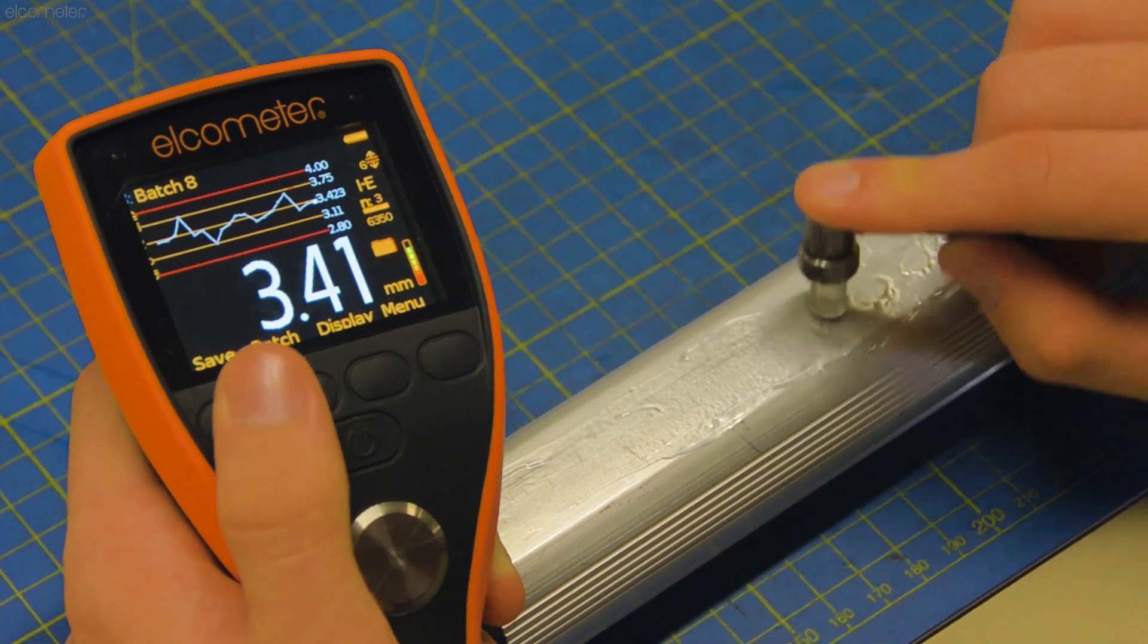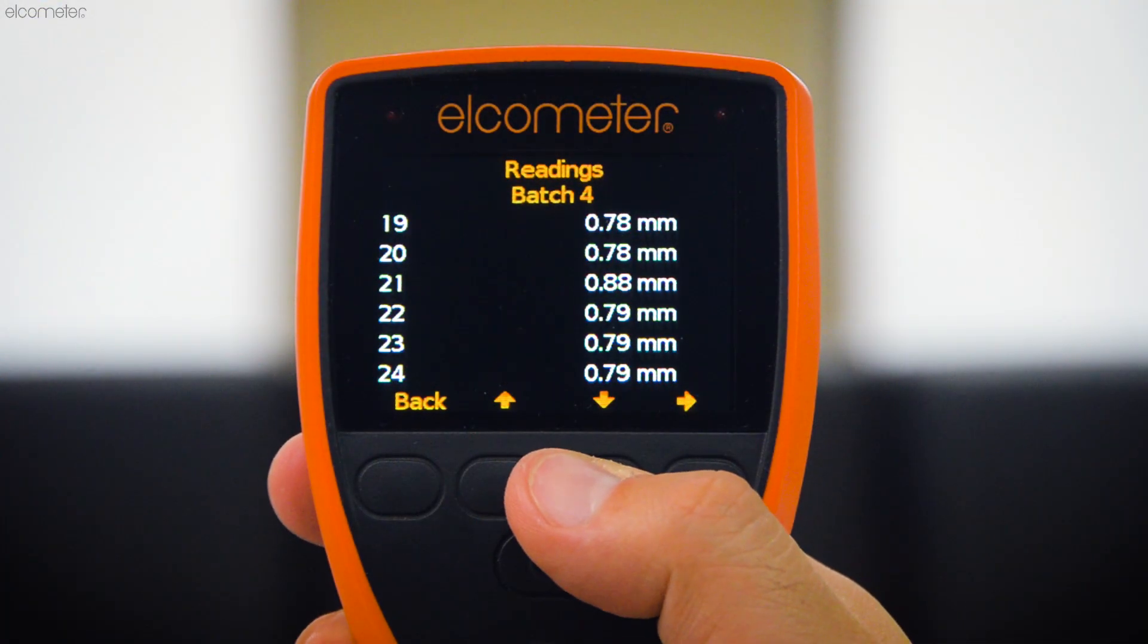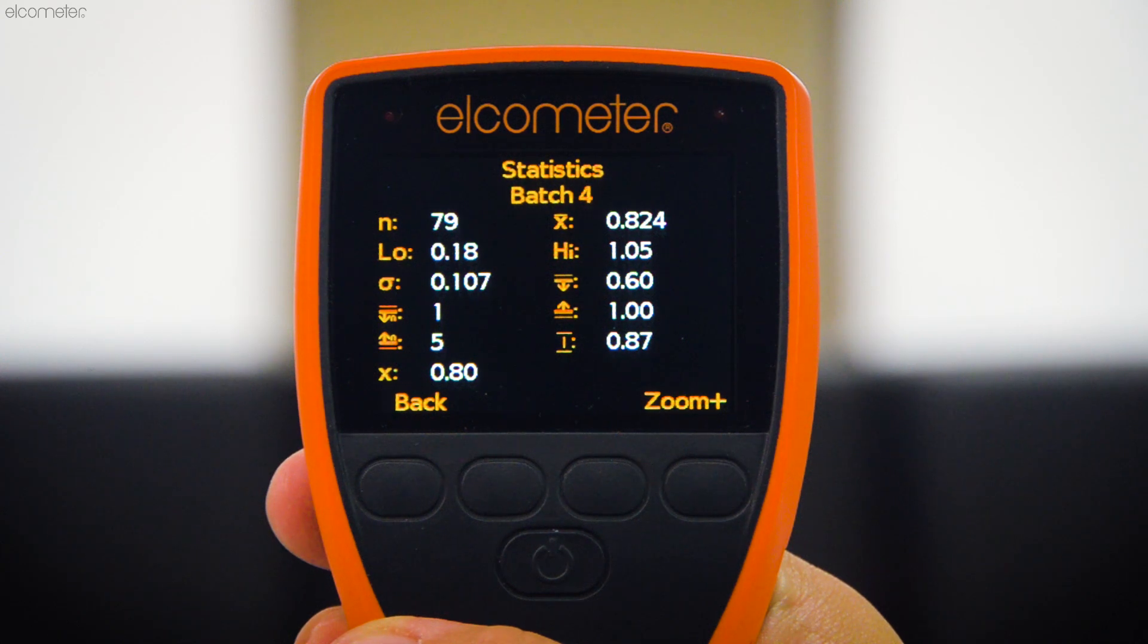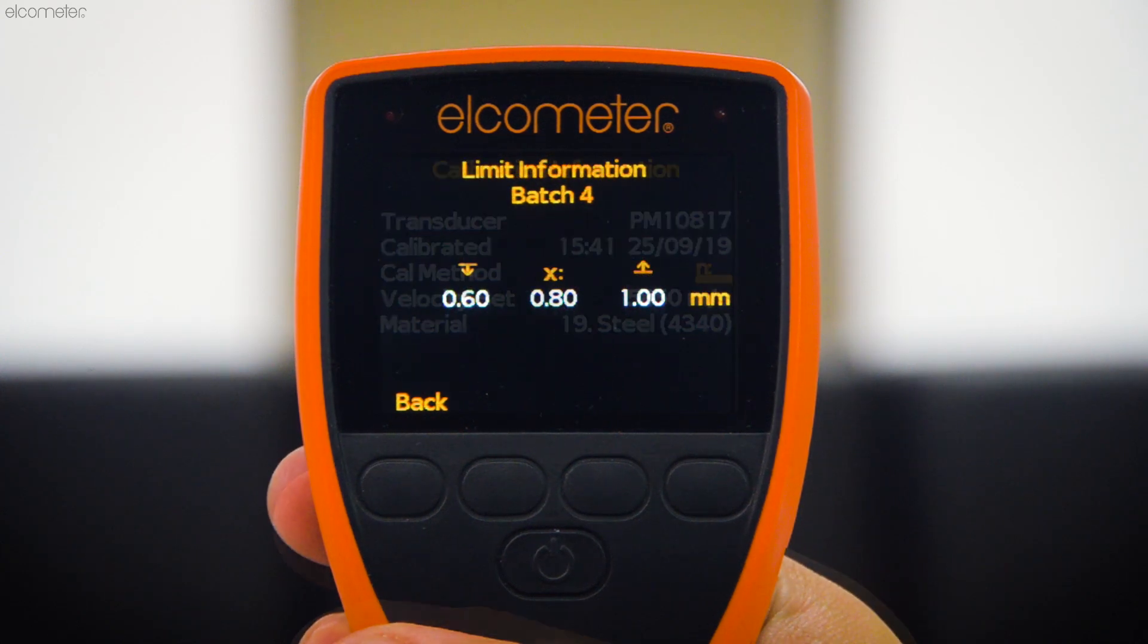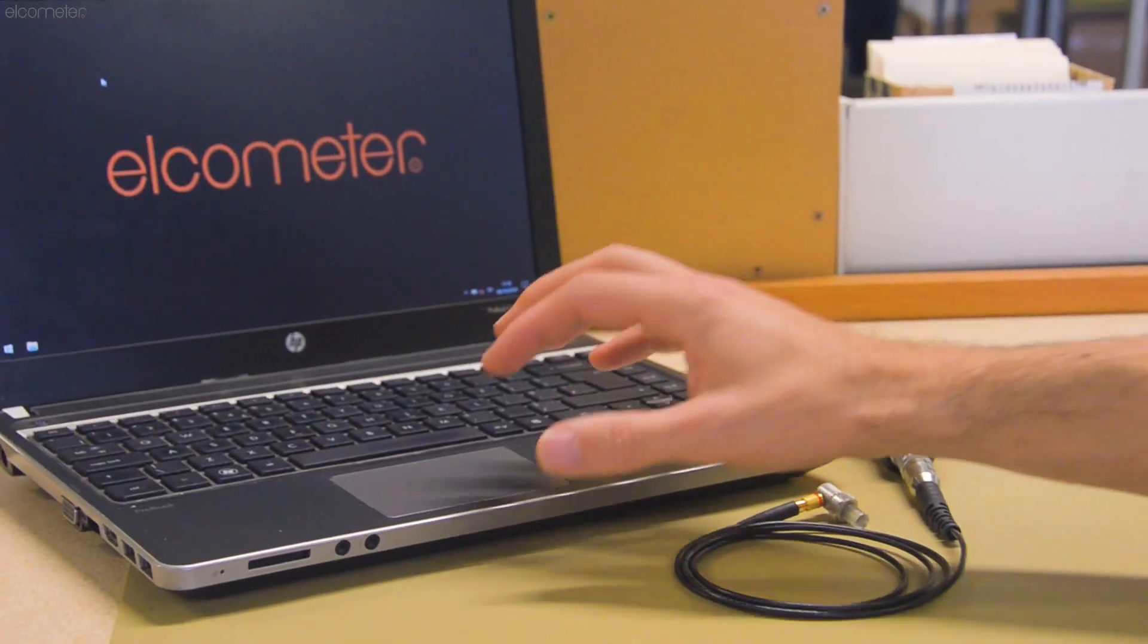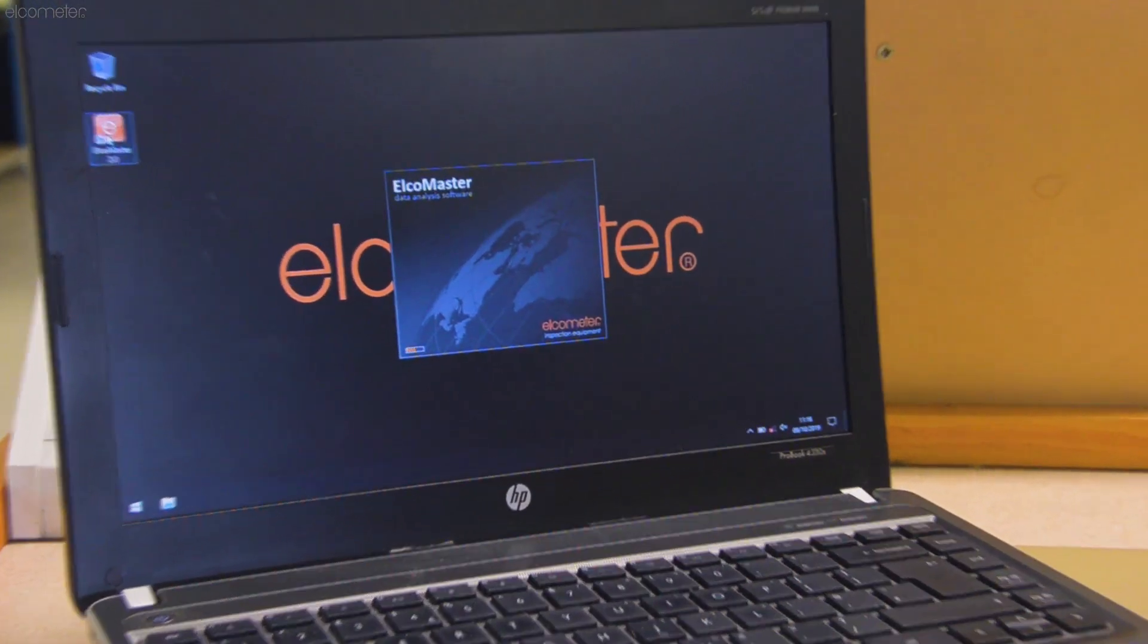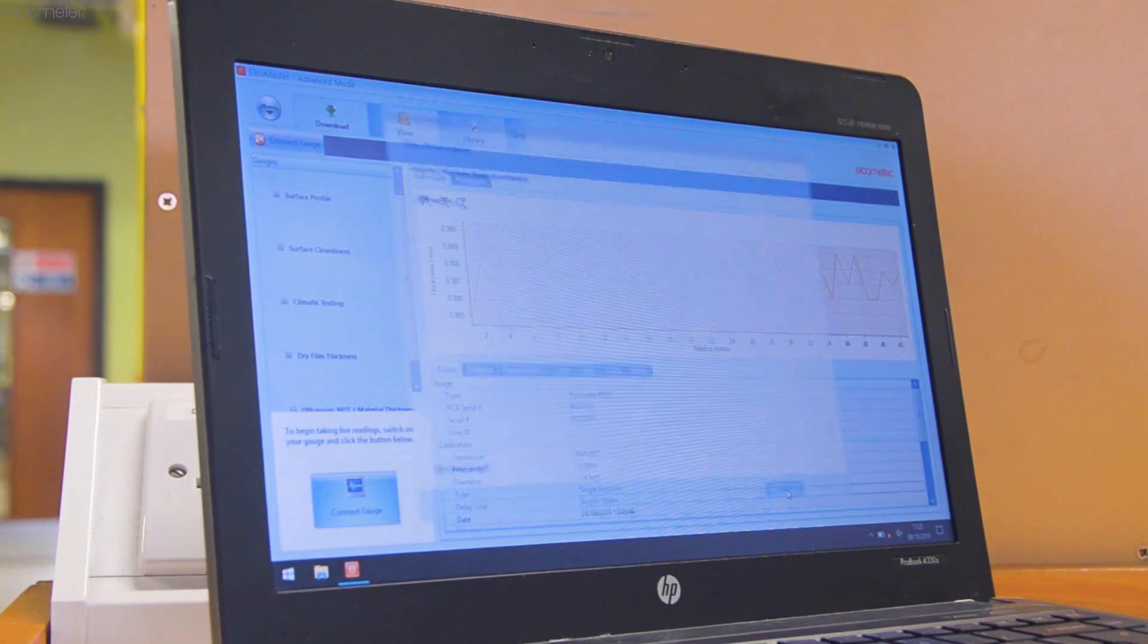Storing up to 100,000 readings in up to 1,000 sequential or grid batches, along with statistics, limits, and calibration information, the Elcometer PTG-8 can transfer all this via USB or Bluetooth to ElcoMaster, a free application for PC, or your own inspection app.